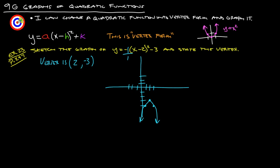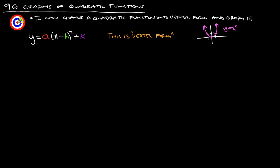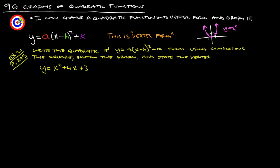So that's one way you'll see it, and then another way you'll see it is like this here. Example 21 from page 295. Let's write the quadratic in y equals a times x minus h quantity squared plus k form using complete the square, and then sketch the graph and state the vertex.